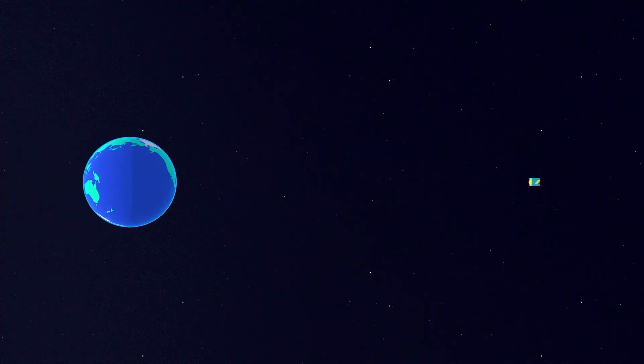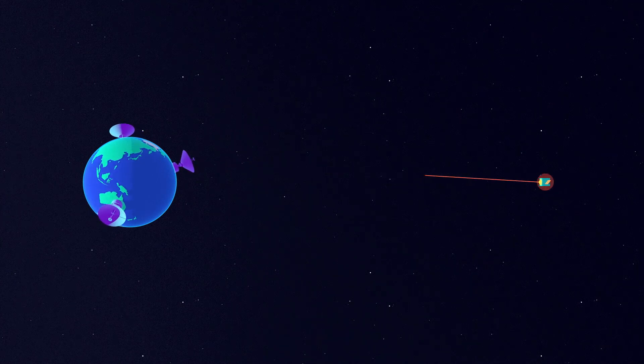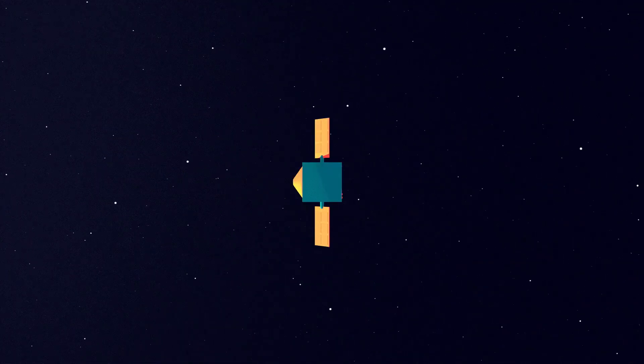If a spacecraft had one of these clocks on board, it could receive a signal from one of those big antennas on Earth and quickly measure its speed and position.